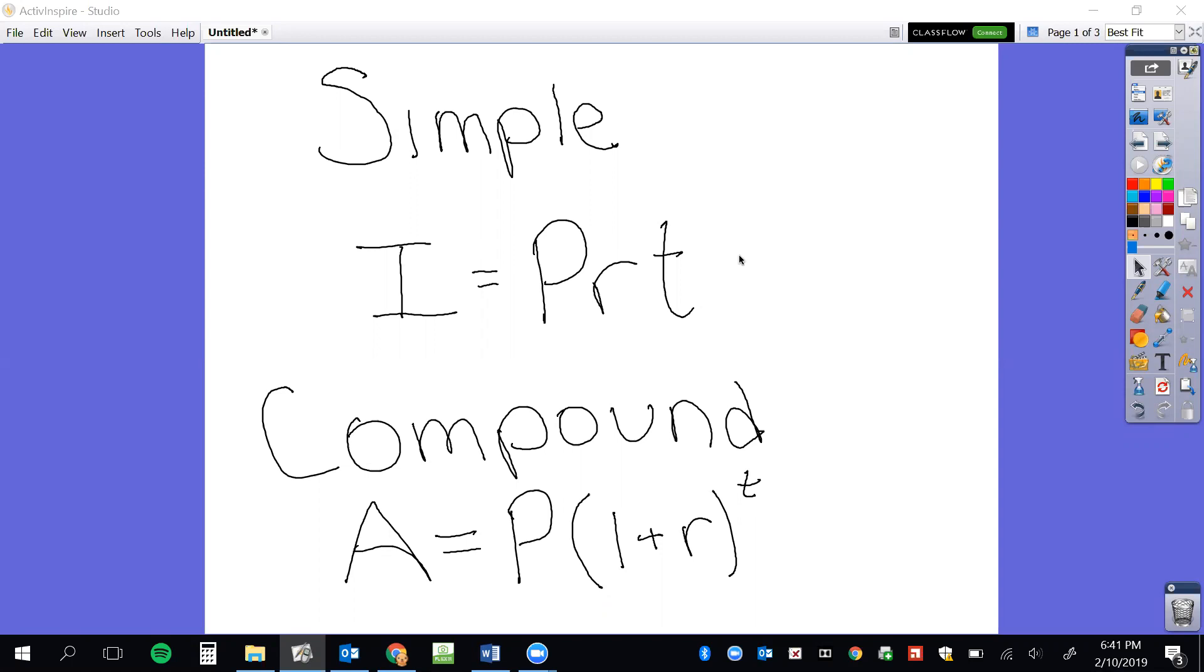P also still is principal, your amount that you started with. And then if you look in the parentheses, we're taking 1 plus R, R being the rate. Again, we need to rewrite R as a decimal. And then T, this time, is an exponent and still T means time. Now for these types of problems, you will be allowed to use a calculator, which makes compound interest much easier to do.